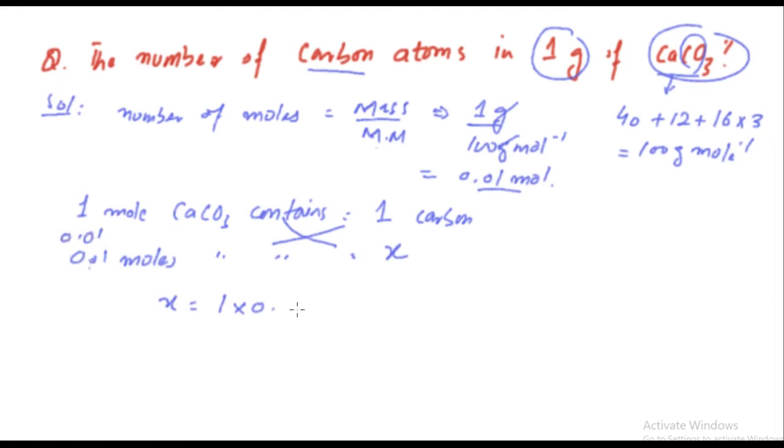Now if we have 1 mole of carbon, it would have Avogadro's number of atoms, 6.022 multiply by 10 to the power 23. But if we have 0.01 mole of carbon, then it will have X atoms.